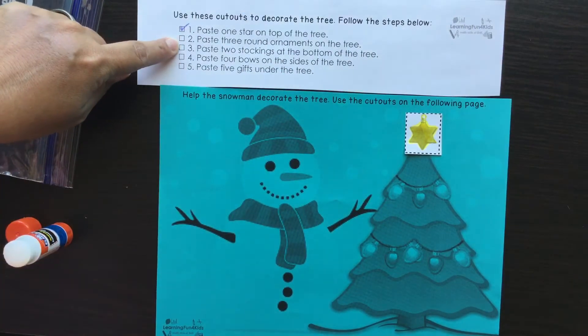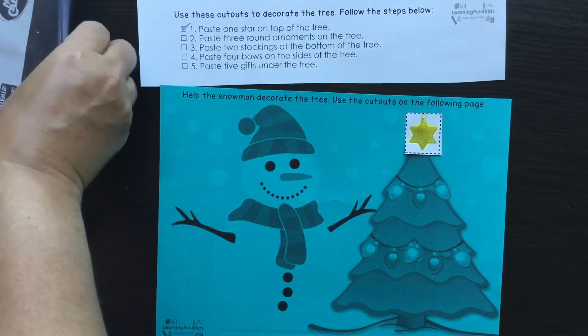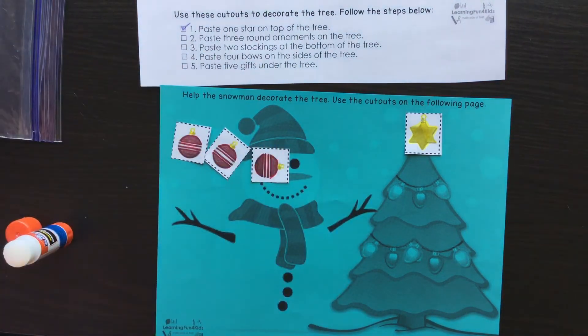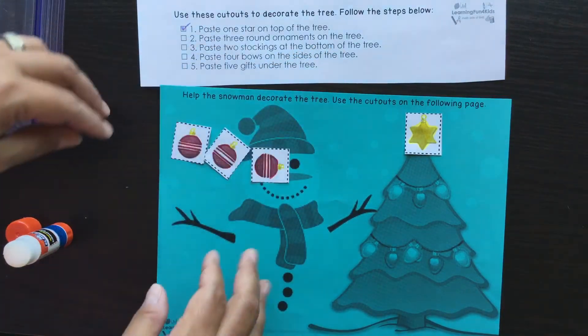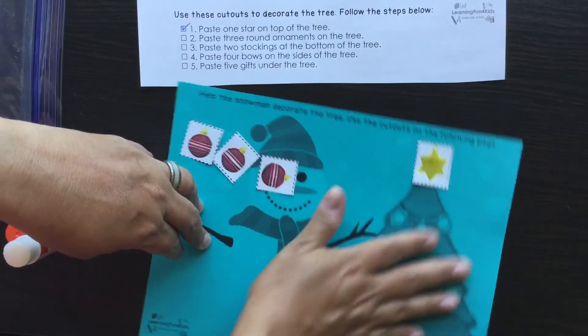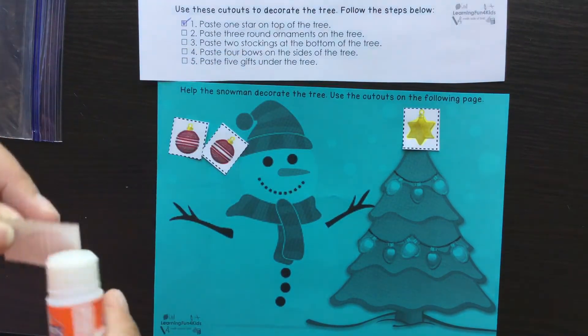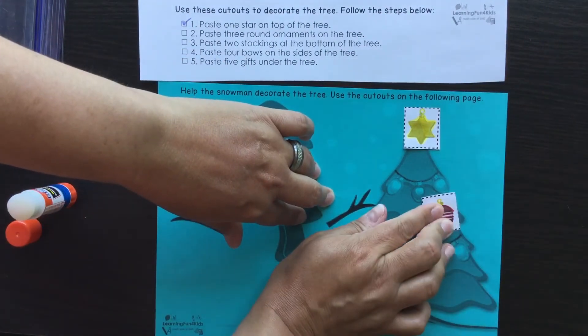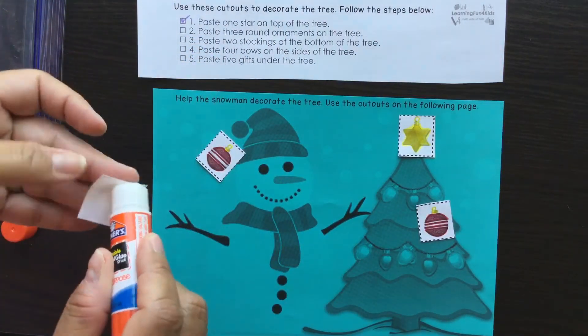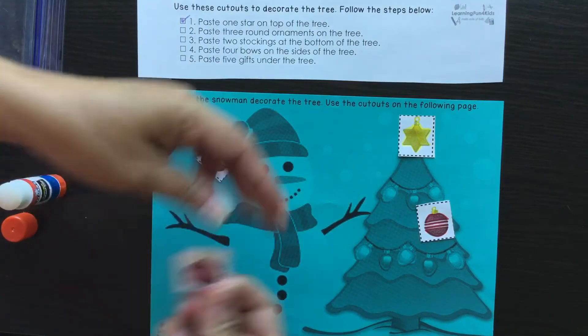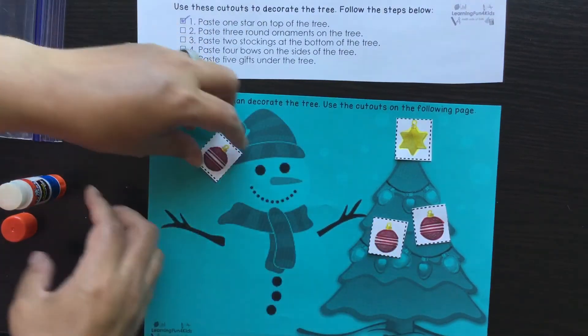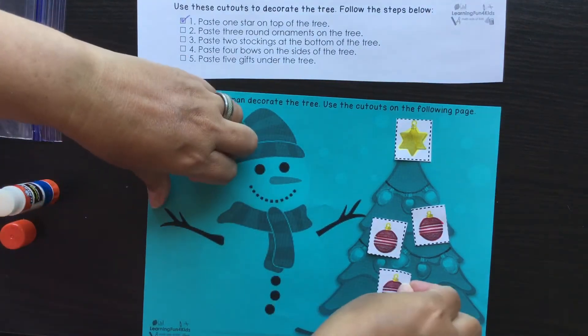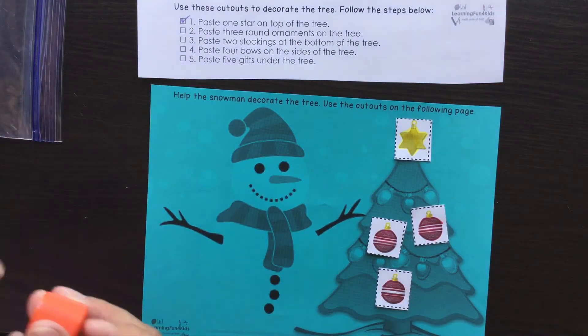Then it says paste three round ornaments on the tree. Now the three ornaments are these right here, and notice that is not two but it's three. And it says on the tree, so it doesn't say at the bottom, it doesn't say on the side, but it's just on the tree, somewhere on the tree. So then we're going to paste it somewhere on there, and then paste it on the next section here, maybe about right there if you wanted to. Leave some room because there's going to be other things that you're going to paste onto the tree.